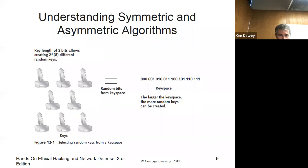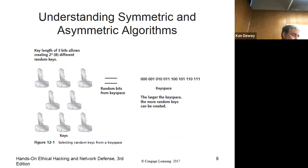Here's an example. Depending on the number of keys, two to the third — three bits — gives us eight possibilities. So that's basically a three-bit key.